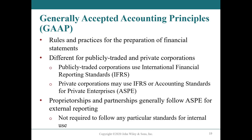Generally accepted accounting principles are often referred to as GAAP. Here in Canada, we have two forms of GAAP. The first is International Financial Reporting Standards or IFRS — you may also hear some people refer to this as IFRS. These are what our publicly traded corporations must report under. We also have Accounting Standards for Private Enterprises, or ASPE. Private corporations may use either IFRS or ASPE. However, those private corporations and sole proprietors and partnerships tend to pick ASPE because it just tends to be simpler.